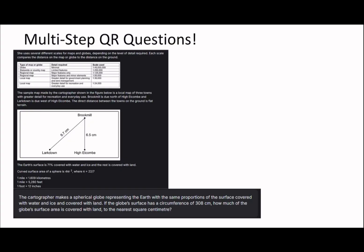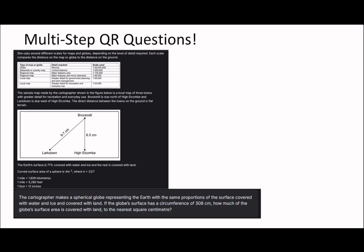The cartographer makes a spherical globe representing the Earth for the same proportion of the surface covered with water and ice and covered with land. If the globe's surface has a circumference of 308 centimeters, how much of the globe's surface area is covered with land to the nearest square centimeter? So once again the emphasis should be on key ideas. Spherical globe, same proportion of the surface covered with water and ice and covered with land. If the globe's surface has a circumference of 308, I'm going to try and do my best to draw like a globe. This is really bad but if you can imagine there's like a globe and obviously you've got the equator like this. I can see the Earth's surface is covered with 71% water and ice, and the rest which is 29% is covered with land. So that number is going to come in crucially.